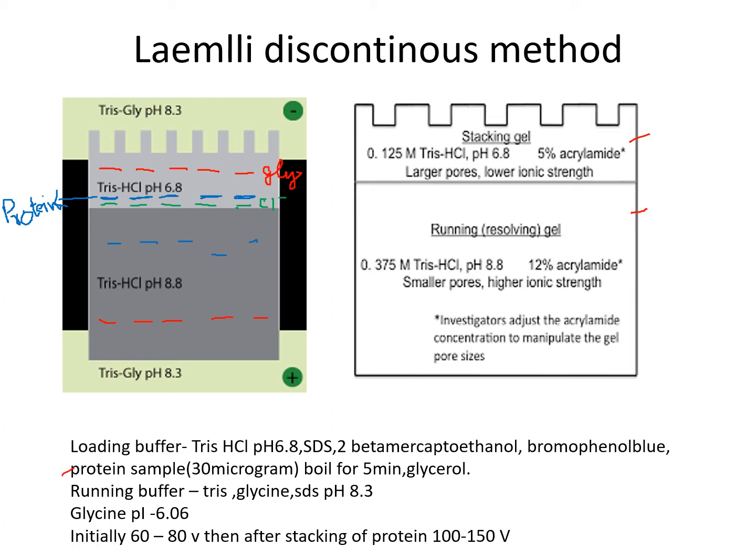The protein sample is boiled with SDS and beta-mercaptoethanol for 5 minutes at 100°C. This degrades disulfide bonds and non-covalent bonds, linearizes the protein, and SDS masks all over the protein with negative charges, so proteins move towards the anode. Bromophenol blue gives blue color so you can see your protein running on the gel, and glycerol gives density to your protein sample so it settles down in the well. The running buffer used is Tris-glycine-SDS at pH 8.3.